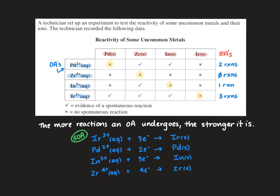Now if we look at our table again and we were to rank our reducing agents we see that palladium has one reaction, zirconium has three reactions, indium has two reactions, and iridium has zero reactions.